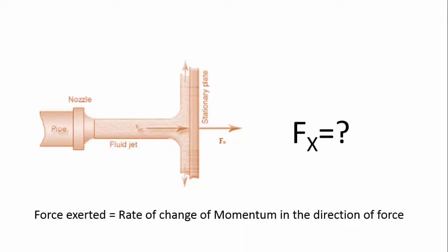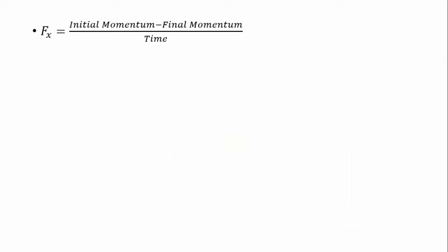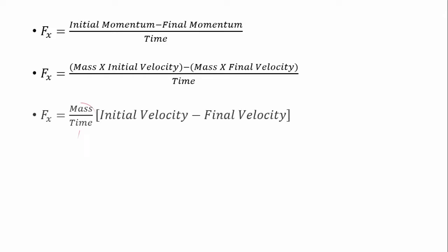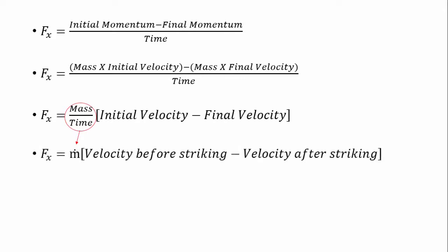As it is rate of change of momentum, it is change of momentum divided by time. Also, we know that momentum is mass times velocity. Now we can take out mass by time outside the bracket, which is actually the mass flow rate.